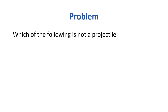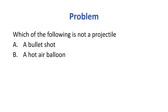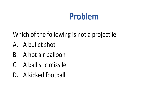Problem: Which of the following is NOT a projectile? Option A — a bullet which is shot. Option B — a hot air balloon. Option C — a ballistic missile. Option D — a kicked football. The correct option is Option B, a hot air balloon.